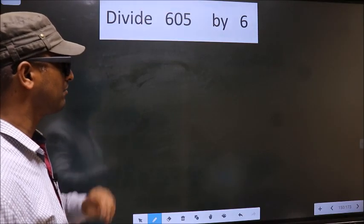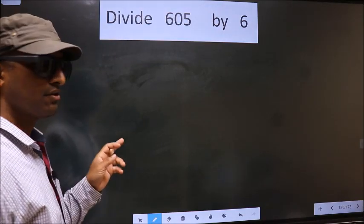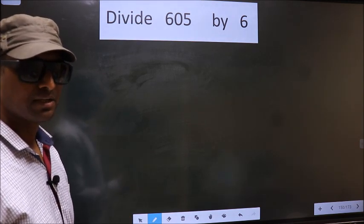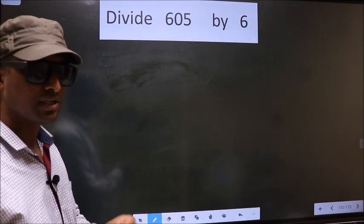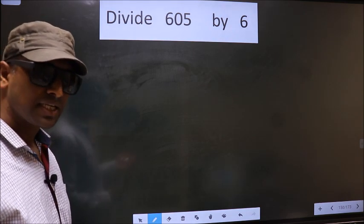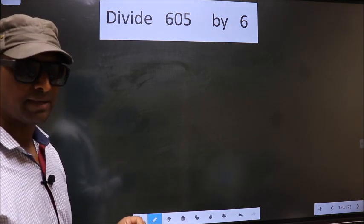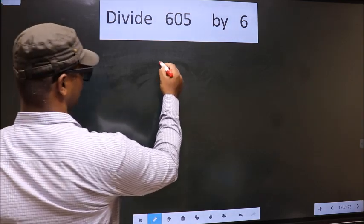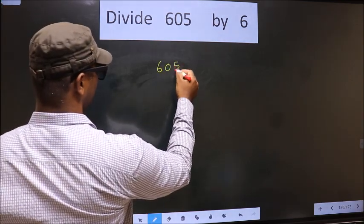Divide 605 by 6. While doing this division, many do this mistake. What is the mistake that they do? I will let you know. But before that, we should frame it in this way: that is 605.